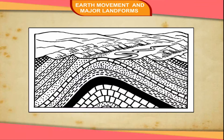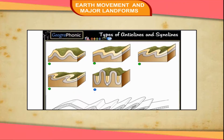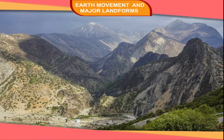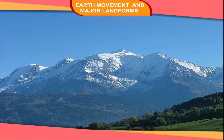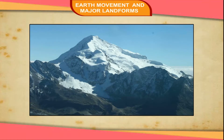Forces of Compression. These forces act on the rock strata from opposite directions, due to which the rock layers are bent up or folded into a series of anticlines and synclines. These forces are responsible for the formation of fold mountains. The Himalayas, the Andes, the Alps and the Rockies have been formed due to the forces of compression and are examples of fold mountains.